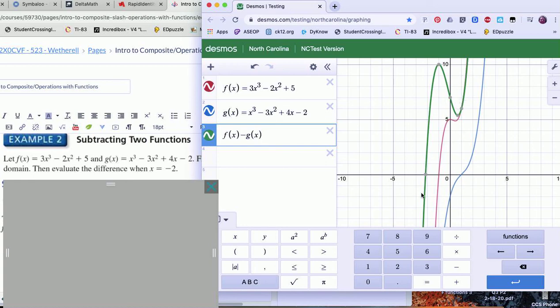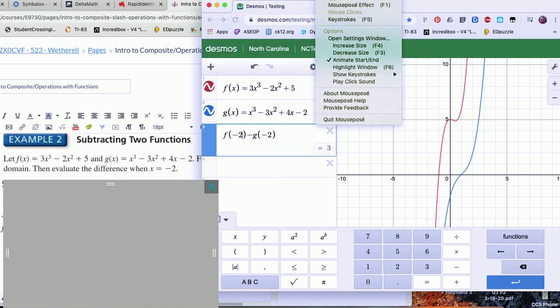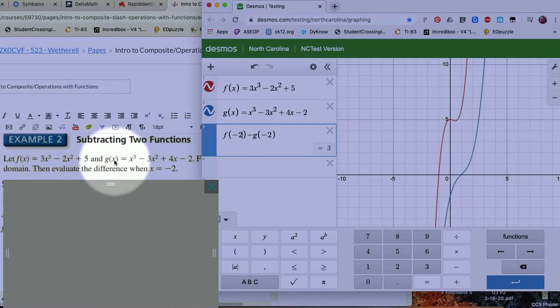Now I need to evaluate this for x equals negative 2. I'm going to replace my x with a negative 2, and I'm getting that off of my problem here: evaluate the difference when x is negative 2. When I put that in, you can see the result is 3.